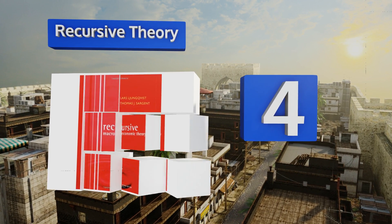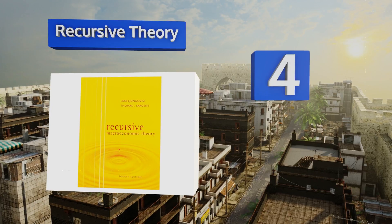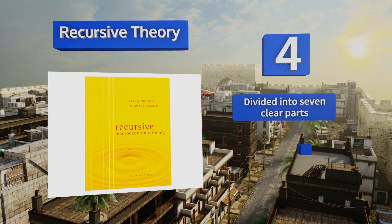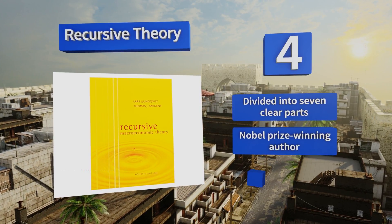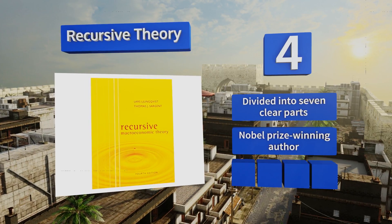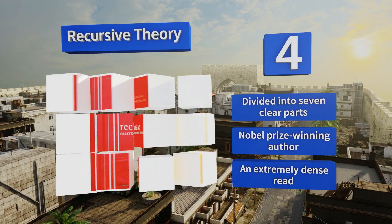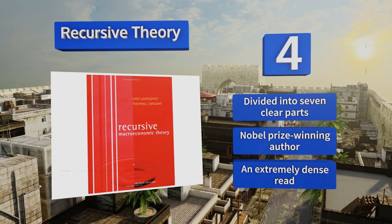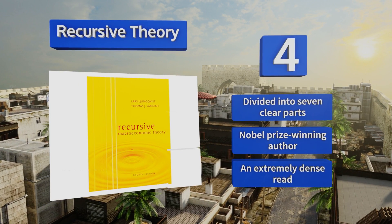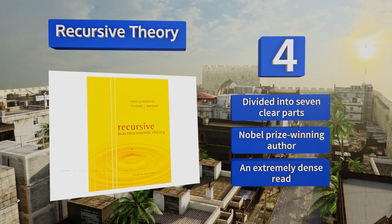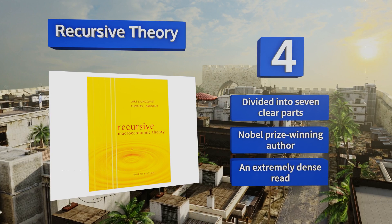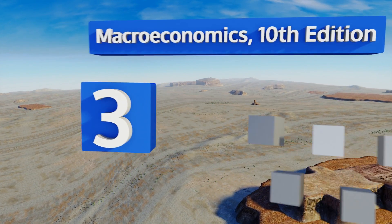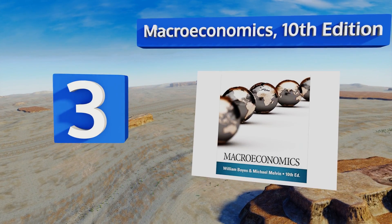At number four, graduate students will find myriad stimulating principles in Recursive Theory, a lucid and approachable option that explores the various methods used to characterize diverse issues. It offers an abundance of sample applications to give pupils plenty of practice. It's divided into seven clear parts and was written by a Nobel Prize-winning author. However, it is an extremely dense read.